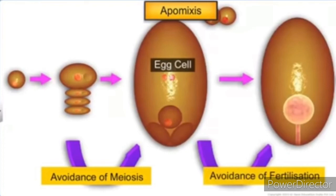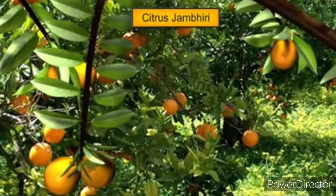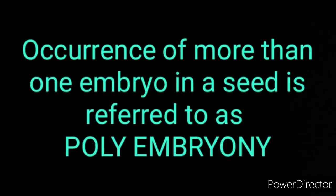There are several ways apomixis seeds develop. In some species, a diploid egg cell is formed without reduction division and develops into the embryo without fertilization. In some fruits like citrus and lemon, many embryos are found inside a single seed. The occurrence of more than one embryo in a seed is called polyembryony.